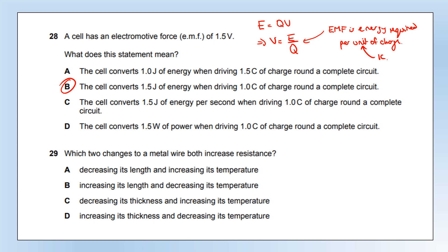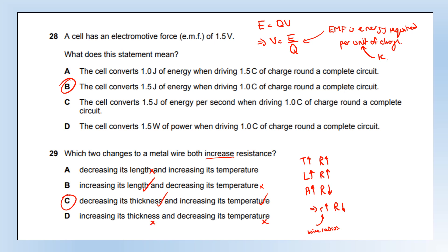Which two changes to a metal wire both increase its resistance? Increasing temperature increases resistance. Increasing length increases resistance. Increasing cross-sectional area decreases resistance, so increasing radius or thickness decreases resistance. Option A doesn't work because you'd need to increase the length. Option B works for length but not temperature. Option C works: decreasing thickness increases resistance and increasing temperature increases resistance. Option D has both changes decreasing resistance. So the answer is C.